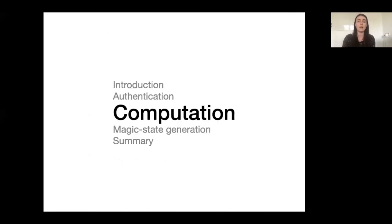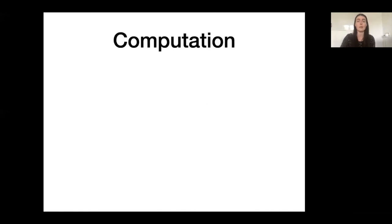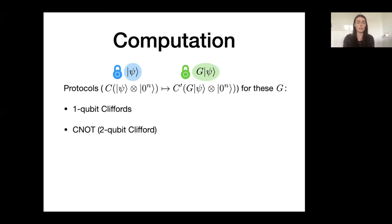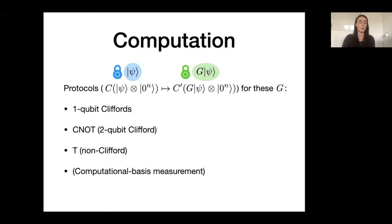I'll now briefly outline how the classical MPC can be used to compute on authenticated quantum data. Computation proceeds gate by gate. We define a collection of sub-protocols, one for each gate type, that update the encoding of psi to an encoding of G applied to psi, possibly under a different key. We define protocols for single-qubit Cliffords, for the CNOT gate (a two-qubit Clifford), and for the T gate (a non-Clifford gate). Together these three gate types can construct circuits for general quantum unitaries. We also give a protocol for computational basis measurements to build general CPTP maps, based on ideas similar to the public authentication test.